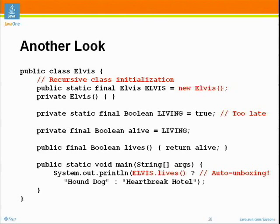Now alive is null, and it's final — it will stay null forever. The constructor returns and we finish initializing the class. The next thing is we set living to true, but it's too late: we've already copied it into the instance variable. Then we run the main method. We execute the ternary operator: Elvis.lives()? Hound Dog : Heartbreak Hotel. Well, Elvis.lives() returns null. And then we have to turn this null into a primitive boolean. In order to do that we have to unbox it. And what happens when you unbox null? NullPointerException. That's called a surprise left jab while auto-unboxing.